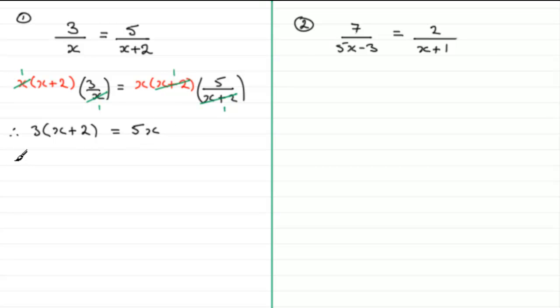So, therefore, I can expand the bracket here and just get 3x plus 6 and that equals the 5x.